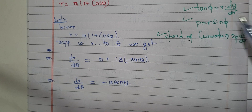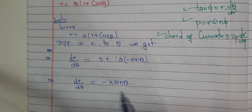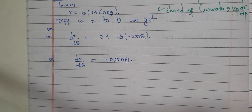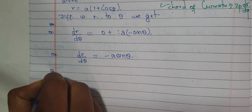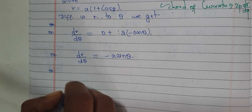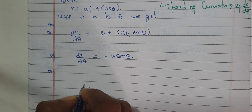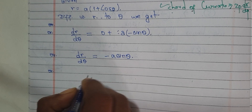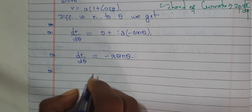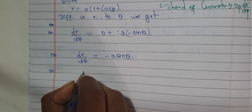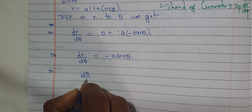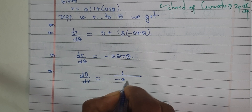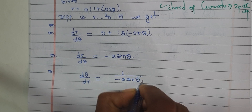Since dθ/dr is the reciprocal of dr/dθ, we get dθ/dr is equal to 1 divided by (−a sin θ).